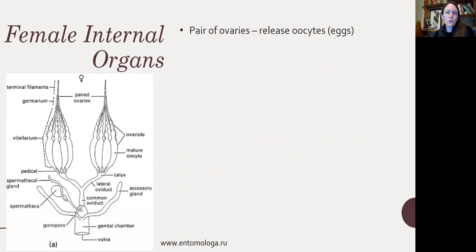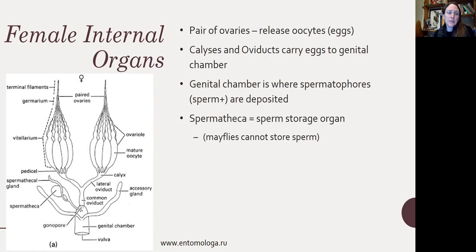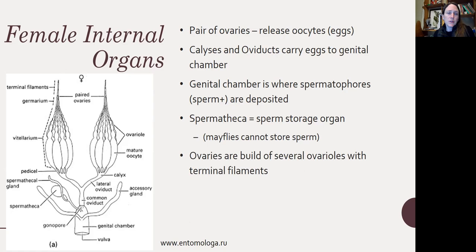Female internal organs are made up of a pair of ovaries that release oocytes or eggs. The eggs are carried through calices and oviducts into a genital chamber. The genital chamber is where the spermatophore — which is sperm plus sometimes a whole complicated set of additional materials — is deposited. The spermatheca is a sperm storage organ, so some insects can store sperm for future fertilization. Mayflies can't do this, but many other aquatic organisms can.